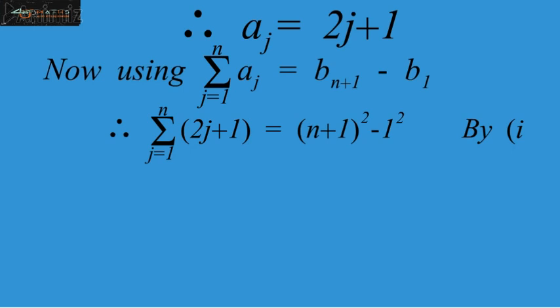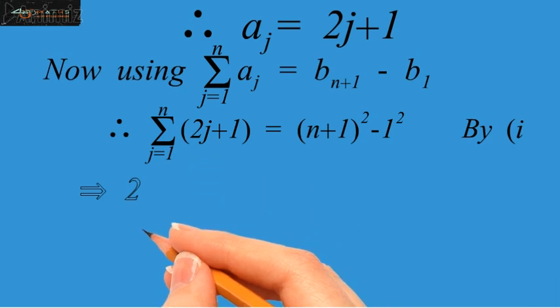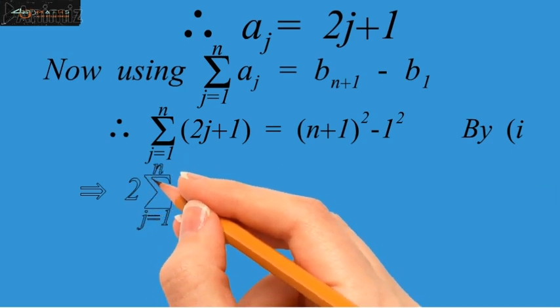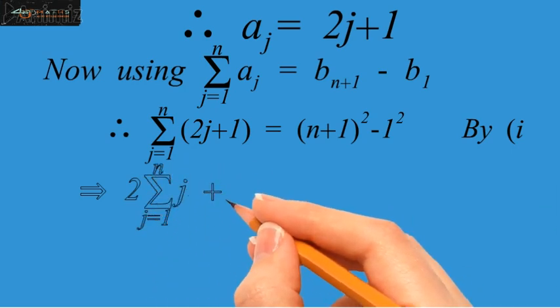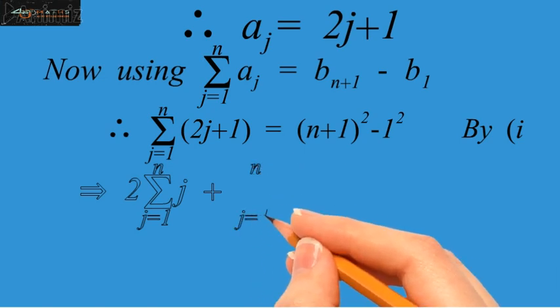Now, applying summation in the left hand side and expanding the formula on the right hand side, so we have 2 times summation j equals 1 up to n, j plus summation j equals 1 up to n, 1. While in the right hand side, we have n squared plus 2n plus 1 minus 1.